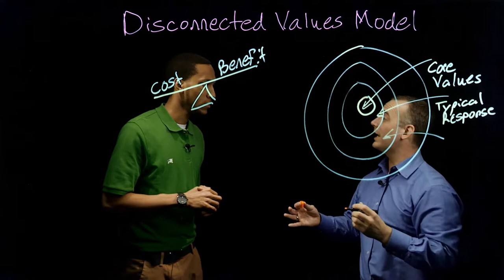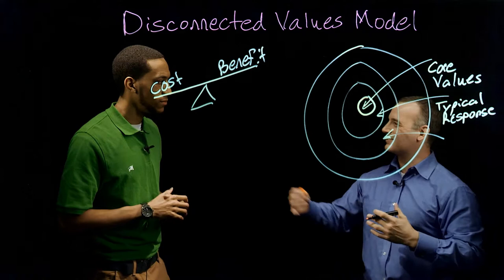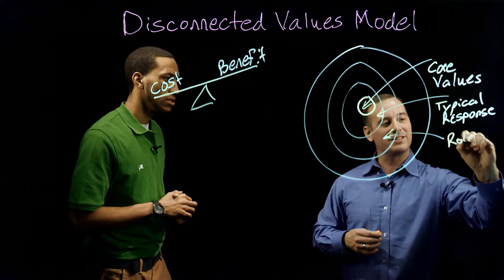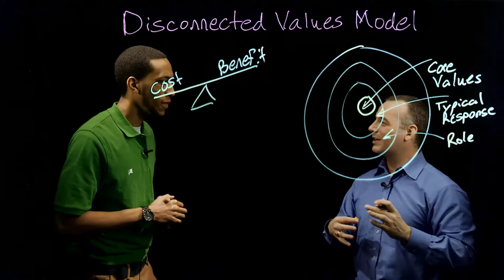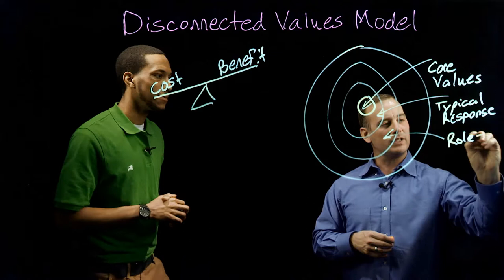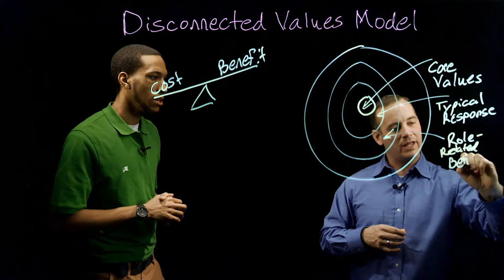And then at the third level, we have our role related behaviors. So these are in different social situations. How you, for example, as a student, maybe in class, your role related behaviors. You're kind of this person who is a real academic and super focused. But maybe another role related behavior when you're out with your friends, you're more easy going and relaxed. So we have our role related behaviors. And then at our last level, we have our social environment.